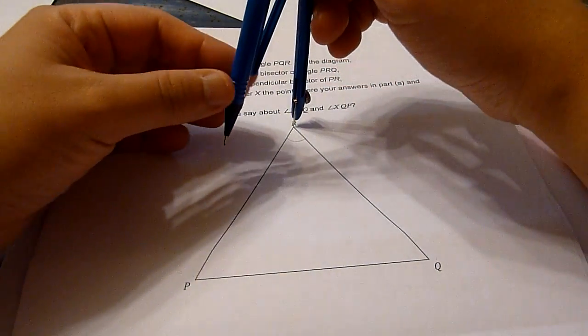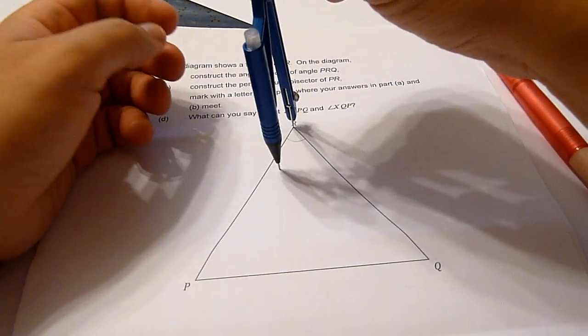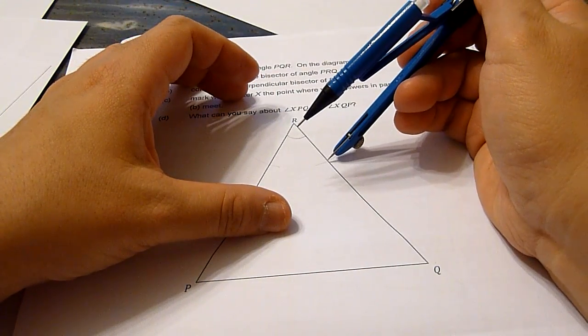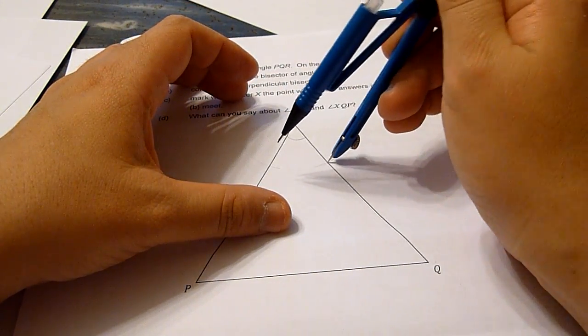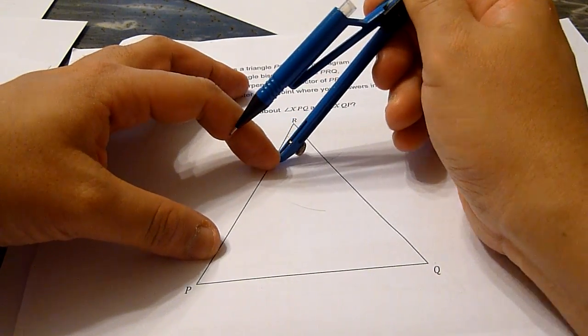Place the compass at the tip, that is R, and we mark two arcs. Then from the intersection point, we mark another pair of arcs.